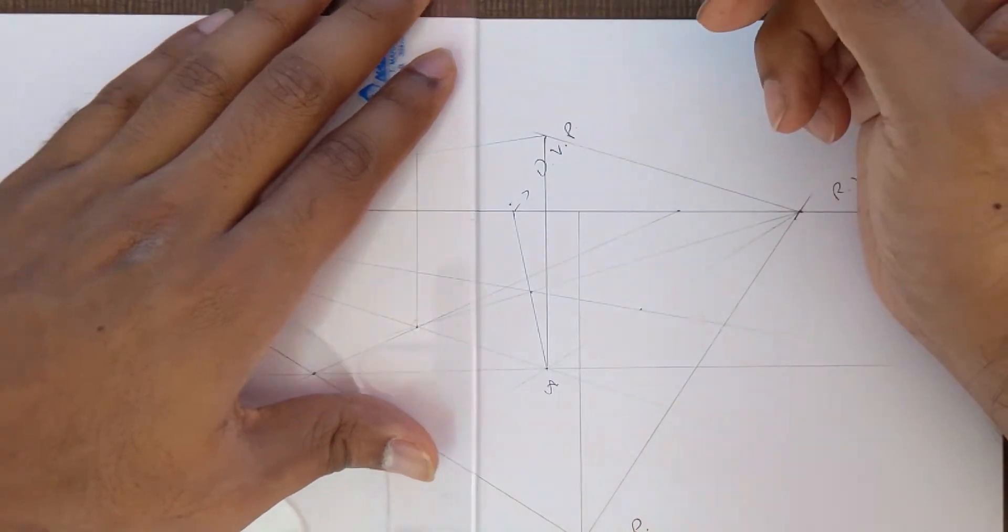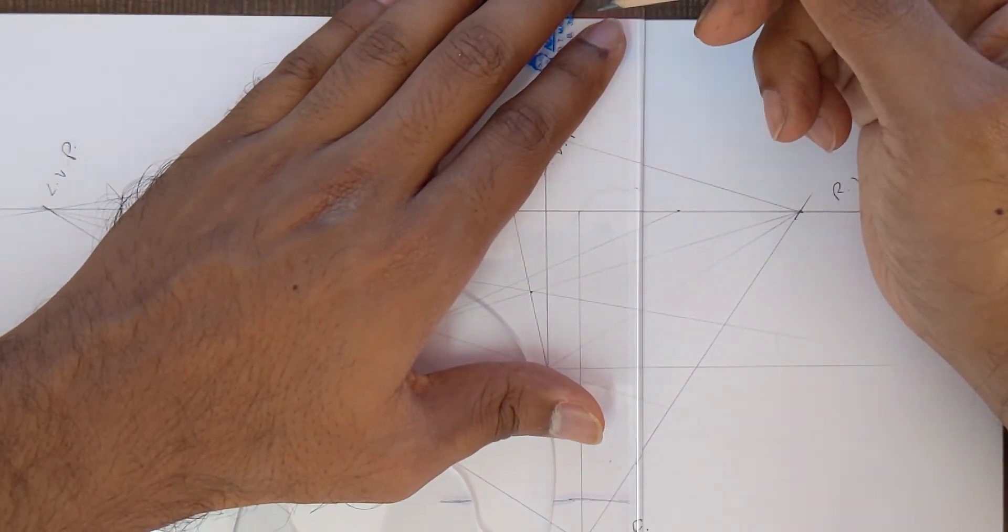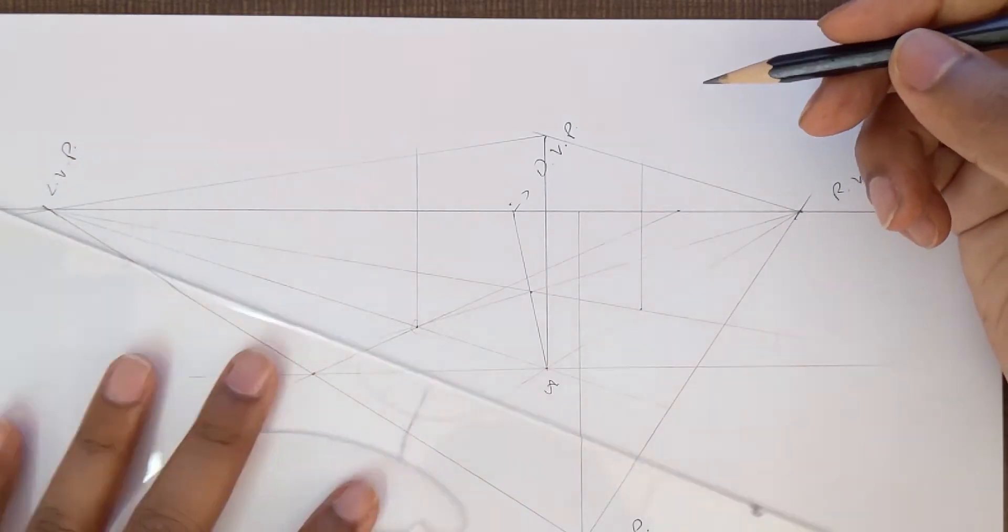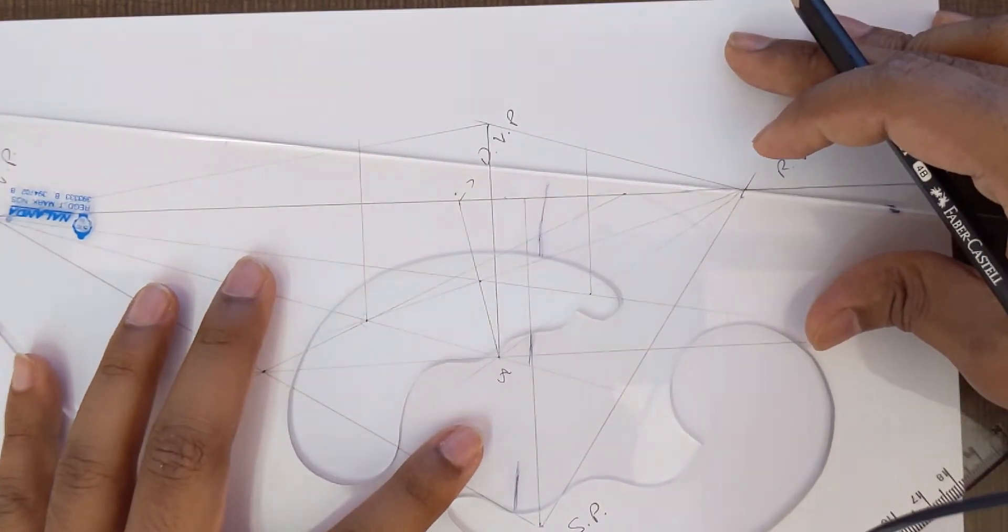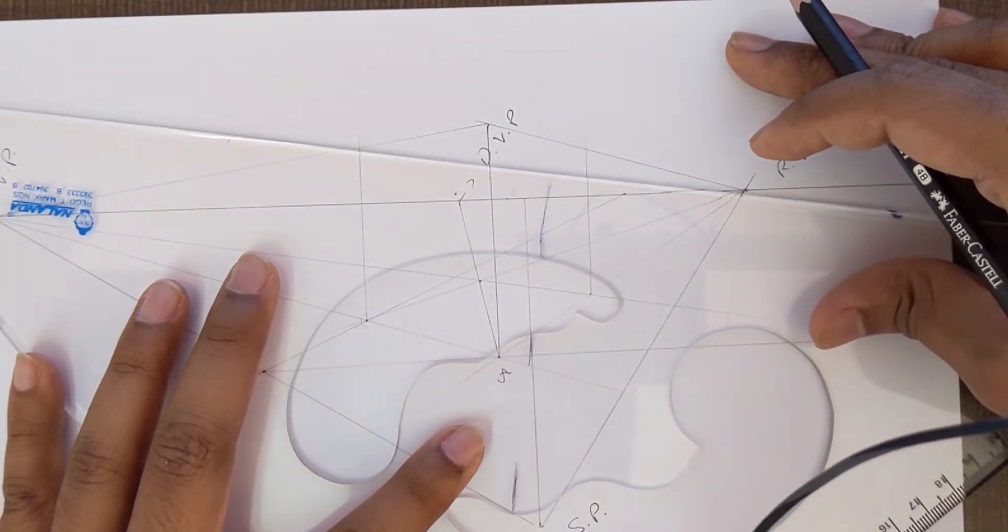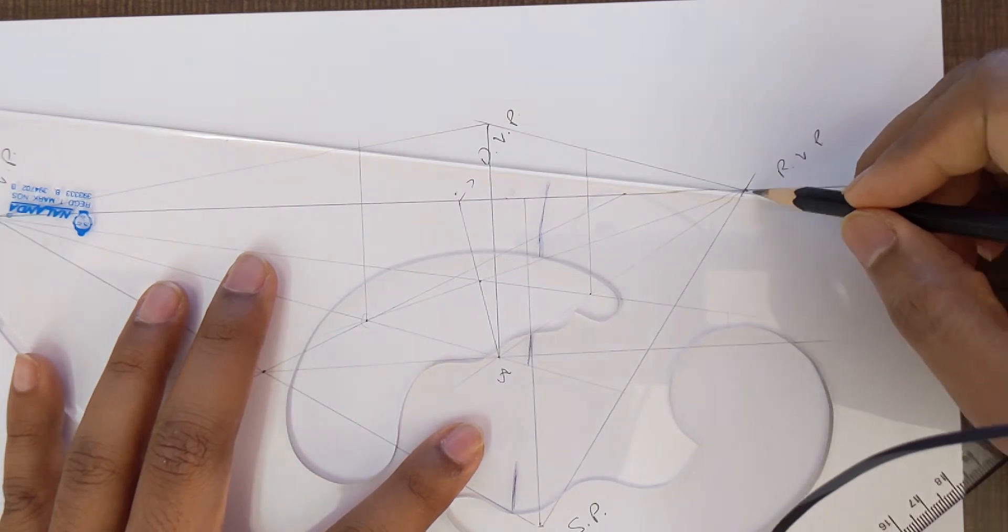And draw verticals from the square face that we had drawn earlier here, and repeat the process by drawing lines to the vanishing points.